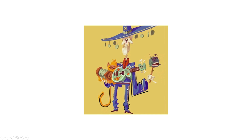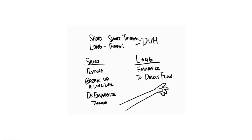Every drawing you're going to look at will have these same things — straights and curves, opposites, straights and curves, thick to thin, tapering, short and long. Short lines can create texture, break up a long line, or de-emphasize things. Long lines emphasize and direct flow — you tend to use long lines when you've got things in action.